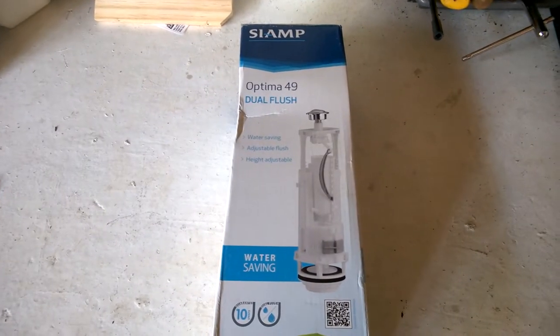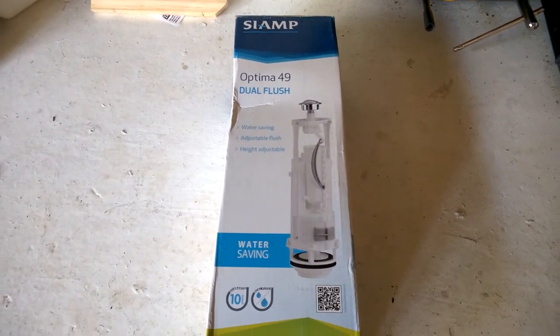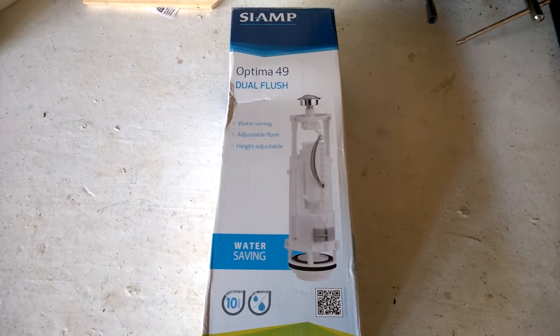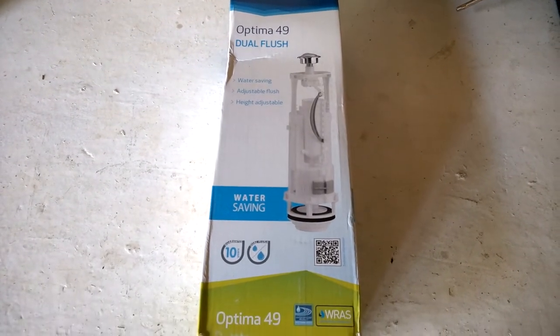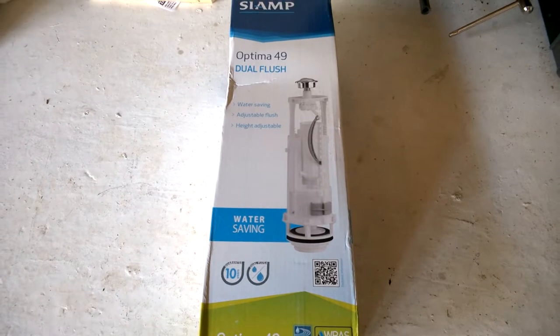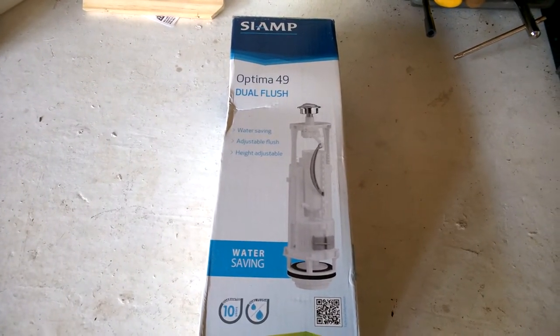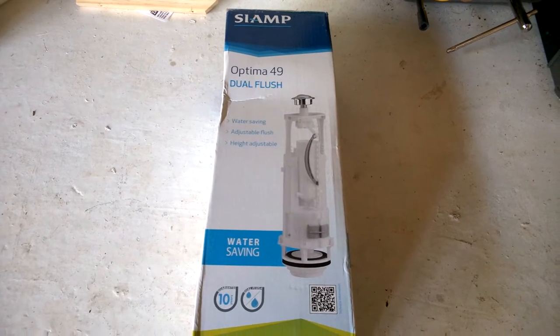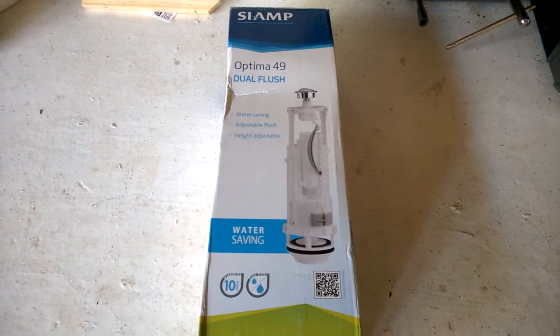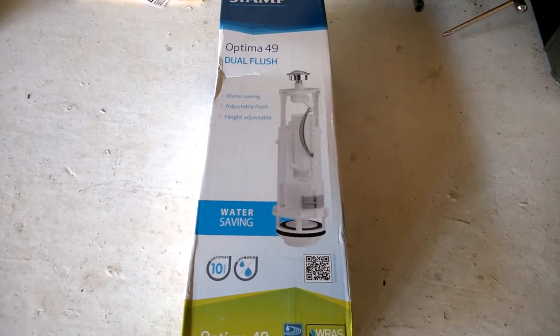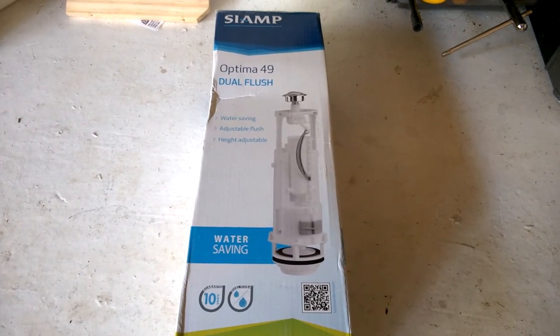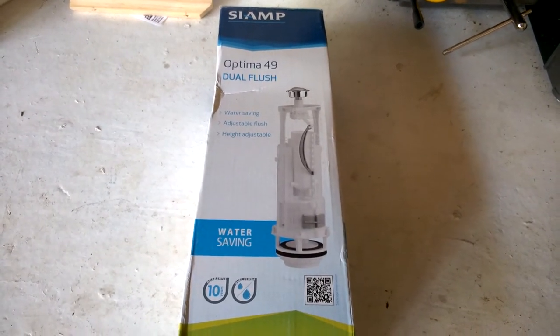This is just how easy it is to replace the SIAMP Optima 49 dual flush unit. Ours has gone faulty. When you press the button, it doesn't really hold the flush. It just releases a tiny bit of water and then the mechanism closes again. So it's super easy to replace if you have one of these.